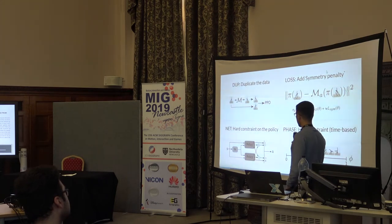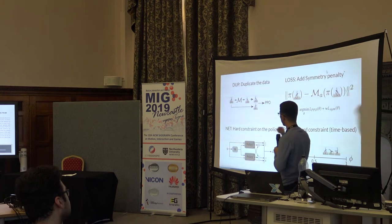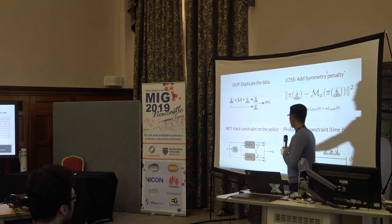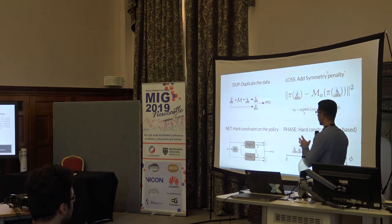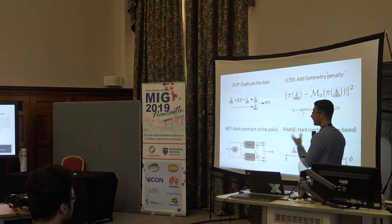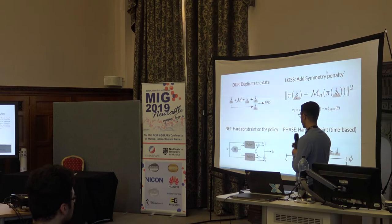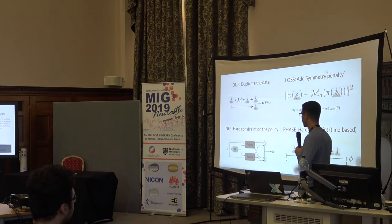The third method we tried was having a hard constraint on the policy itself. In this method, what we are trying to do is make the network architecture actually symmetric. We have a fairly general approach, and if you give me one policy, I can make it completely symmetric.